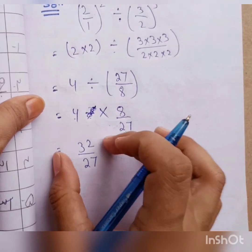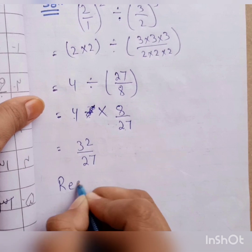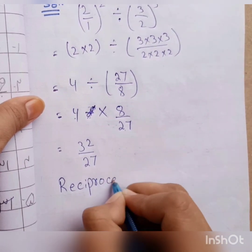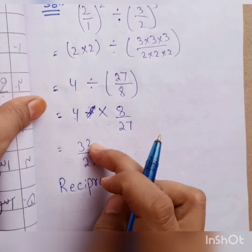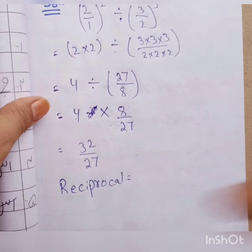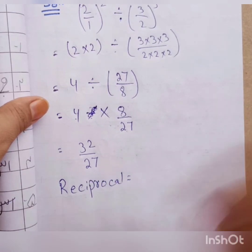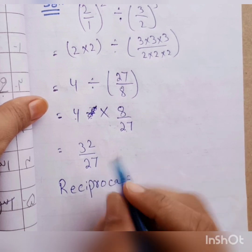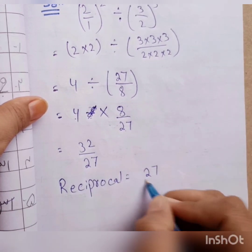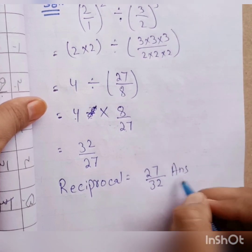We multiply 4 by 8 to get 32, giving us 32 by 27. We had to find the reciprocal. Reciprocal means that the numerator and denominator positions change — numerator becomes denominator and denominator becomes numerator. Here 27 was our denominator, so it becomes our numerator, and 32 becomes our denominator. This is our answer.